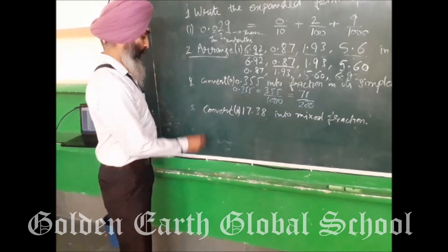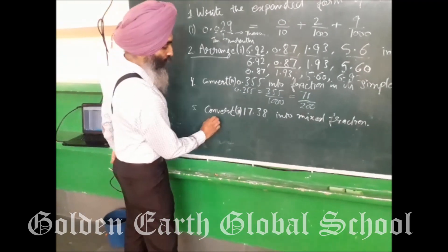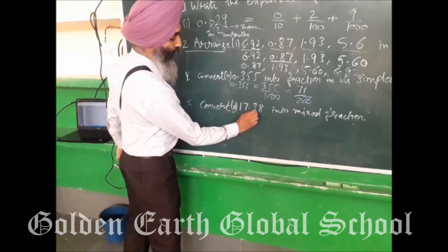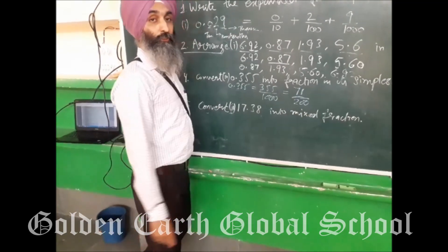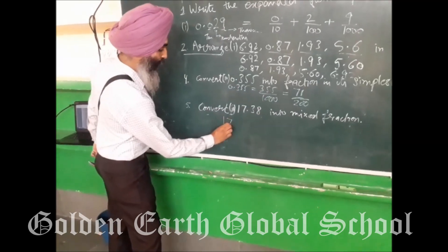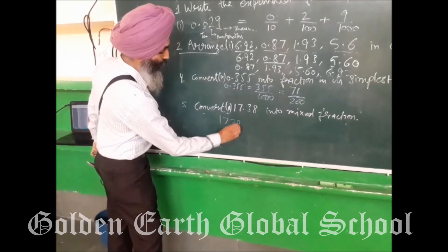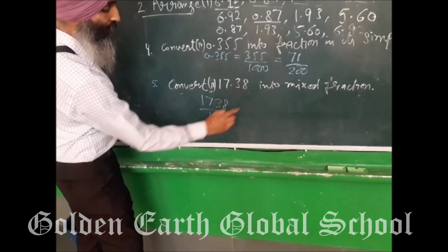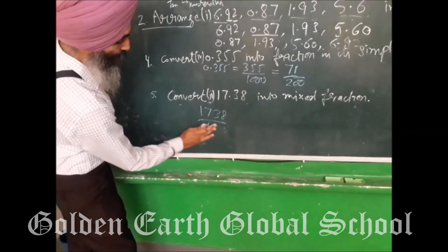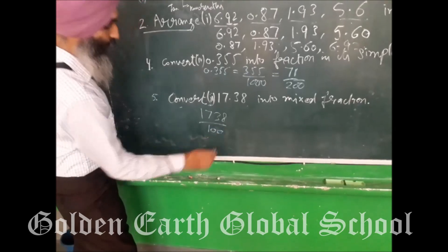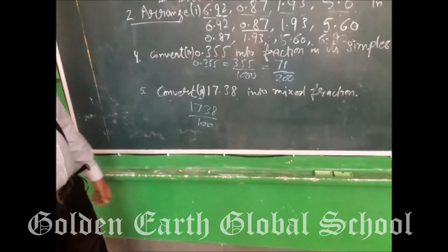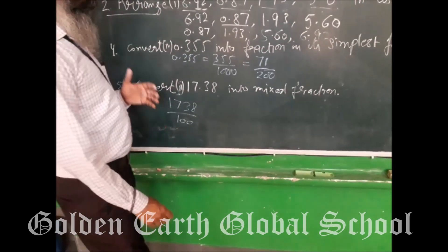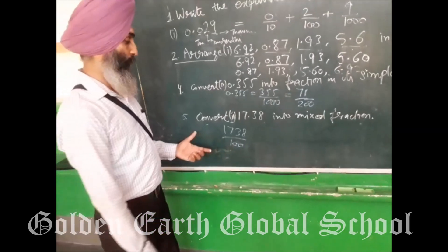If you have a doubt, you can ask me. The 5th question is: convert 17.38 into a mixed fraction. How will you do mixed fraction? First of all, remove the decimal. When you remove the decimal, there are two decimal places, so the denominator is 100. Before converting to mixed fraction, you have to convert into simplest form.